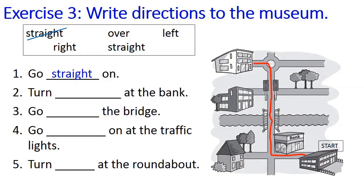Here are the answers. One: go straight on. Two: turn right at the bank. Three: go over the bridge. Four: go straight on at the traffic lights. Five: turn left at the roundabout.